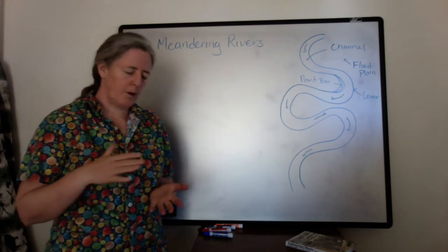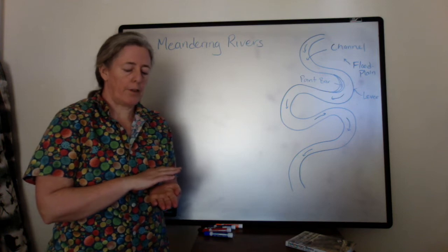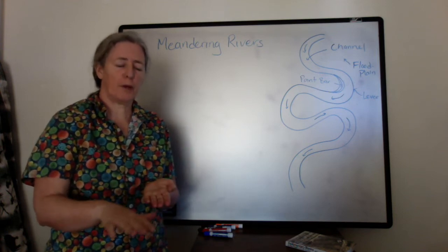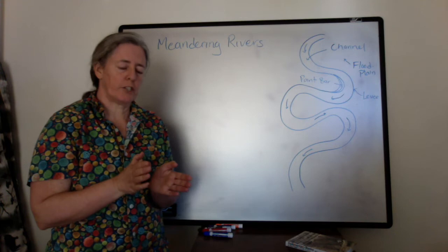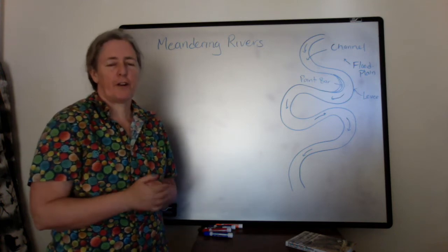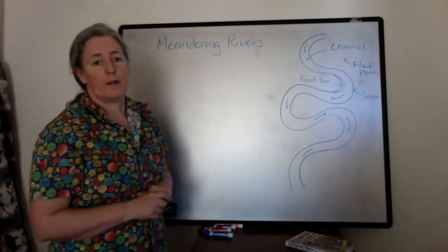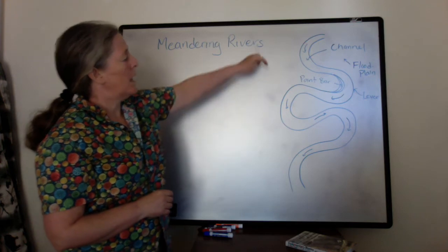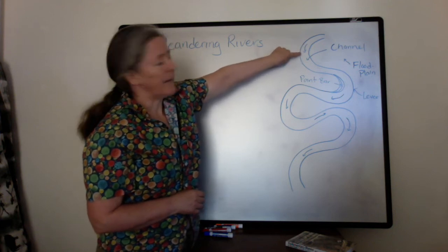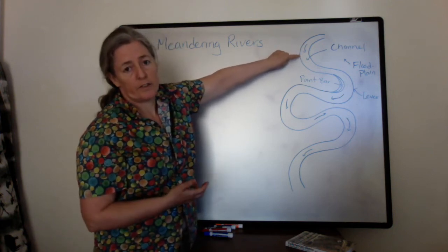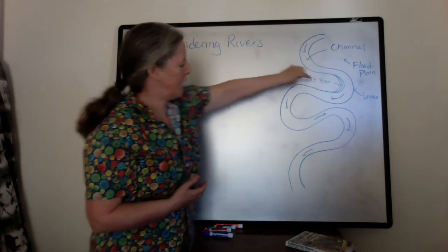Meandering rivers form on low gradient areas where the water is driven down the slope, but the actual dynamics of the flow and erosion allow the channel to deviate from the main down-slope direction. I've drawn a map view of a meandering river here, and the slope will be going down this way, but the dynamics of the variations in the Reynolds number — including the flow speed and the water depth — cause the river to build out these bends.